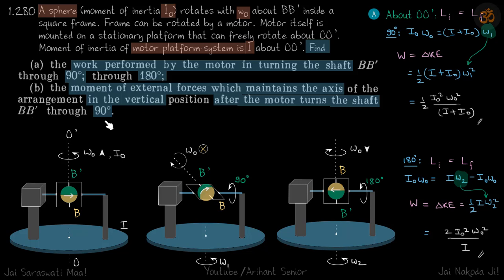The frame can be rotated by a motor. The axis of the motor is perpendicular to the axis of the sphere (BB'). The arrow represents the direction of motion of the sphere - the green part is the top half and yellow is the bottom half, so initially it's rotating like this. The motor itself is mounted on a stationary platform that can freely rotate about OO'.